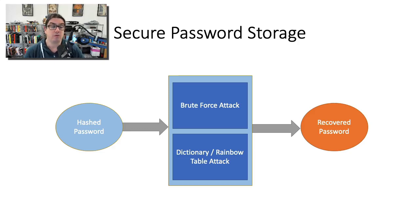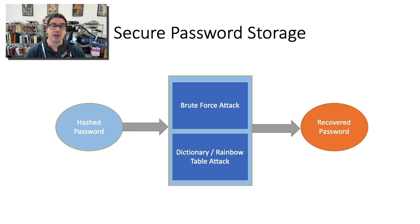Hashing has several vulnerabilities that can be used against it. The first one is what's called a brute force attack. If you have a password that's been hashed and stored in a database, an attacker might try millions or even billions of combinations of passwords until they get one which matches the stored hash. This is relatively easy to do these days using tools like Hashcat, which you can download for free.